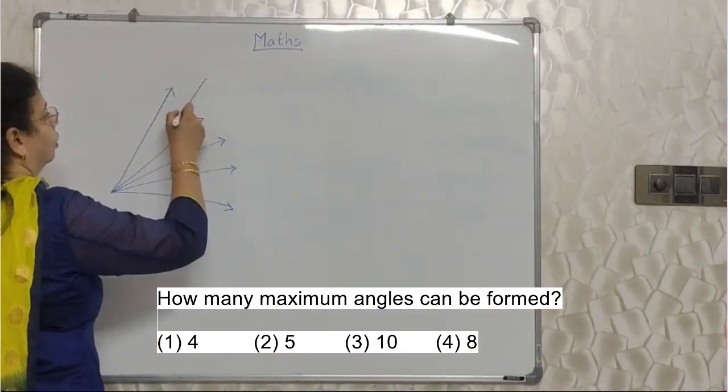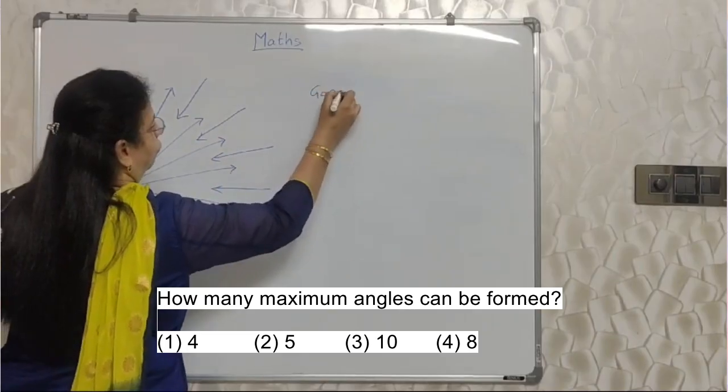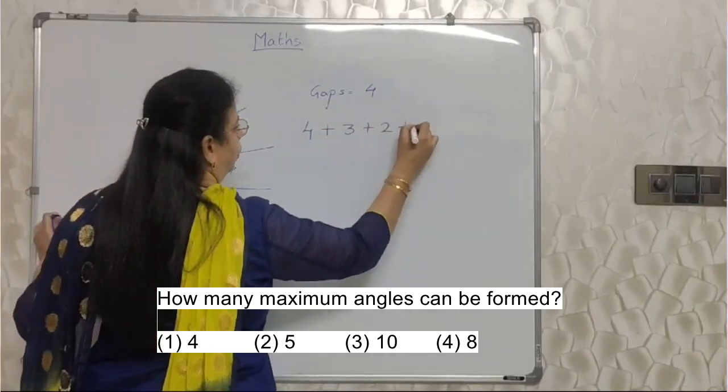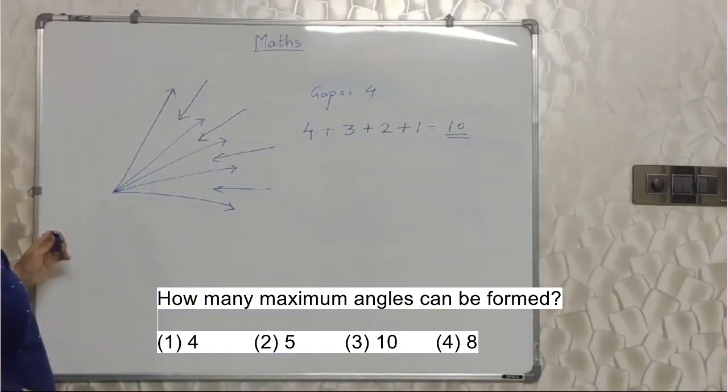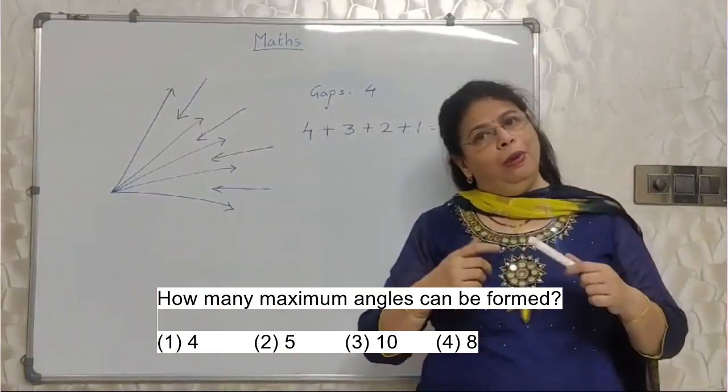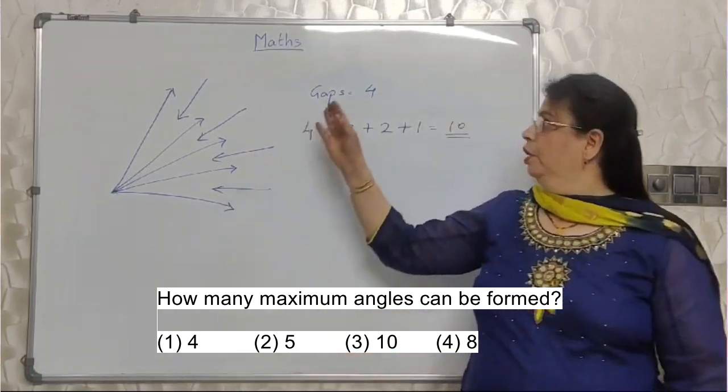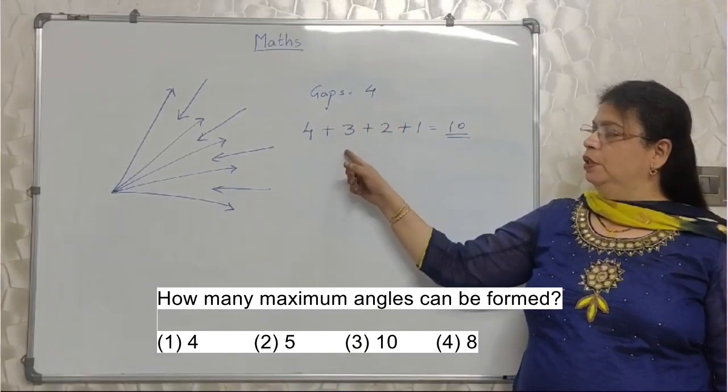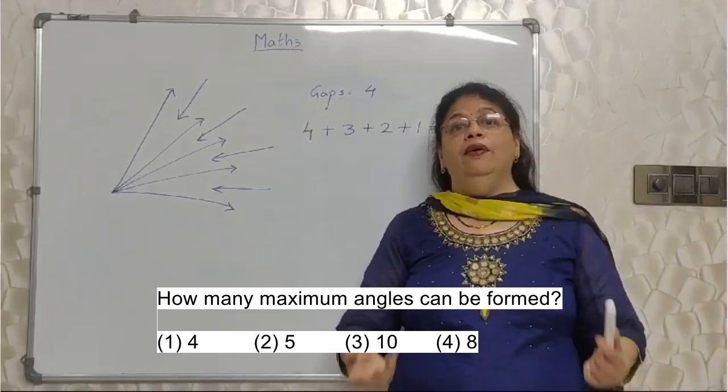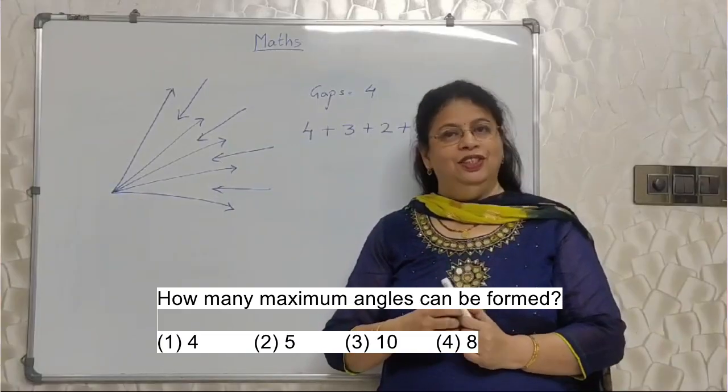This is again, there is a formula. You have to count these gaps. 1, 2, 3 and 4. How many gaps are there? 4. So, your formula is 4 plus 3 plus 2 plus 1. Answer is 10. Imagine counting the number of angles. I am not saying you will not get it. You will get the correct answer also. But time spent is more. Here, I just counted the gaps. If there are 5 gaps, then 5 plus 4 plus 3 plus 2 plus 1. Here there are 4 gaps. So, 4, 3, 2, 1 and the answer is ready. I have saved lot of time which I can utilize for another sum. Correct?